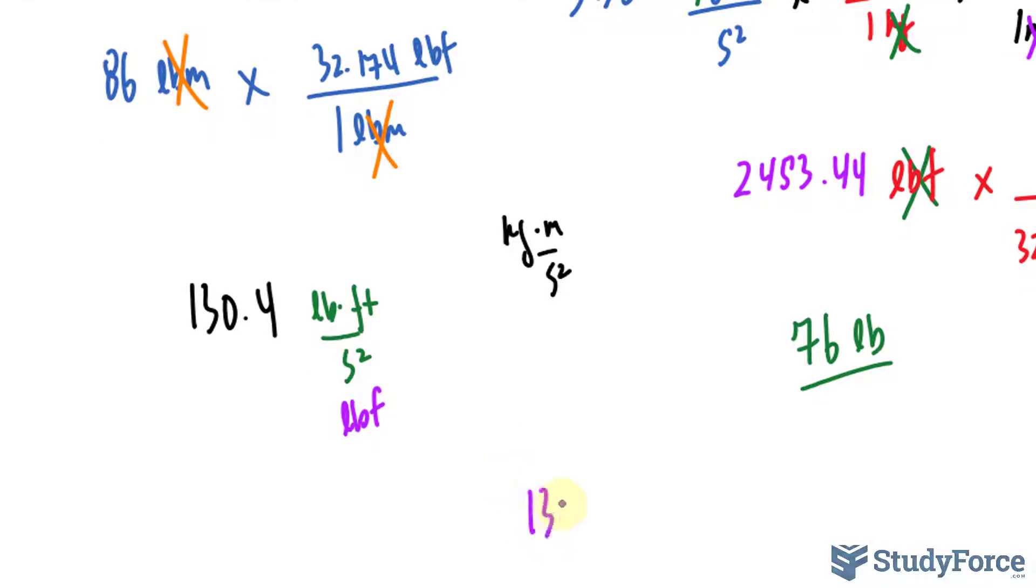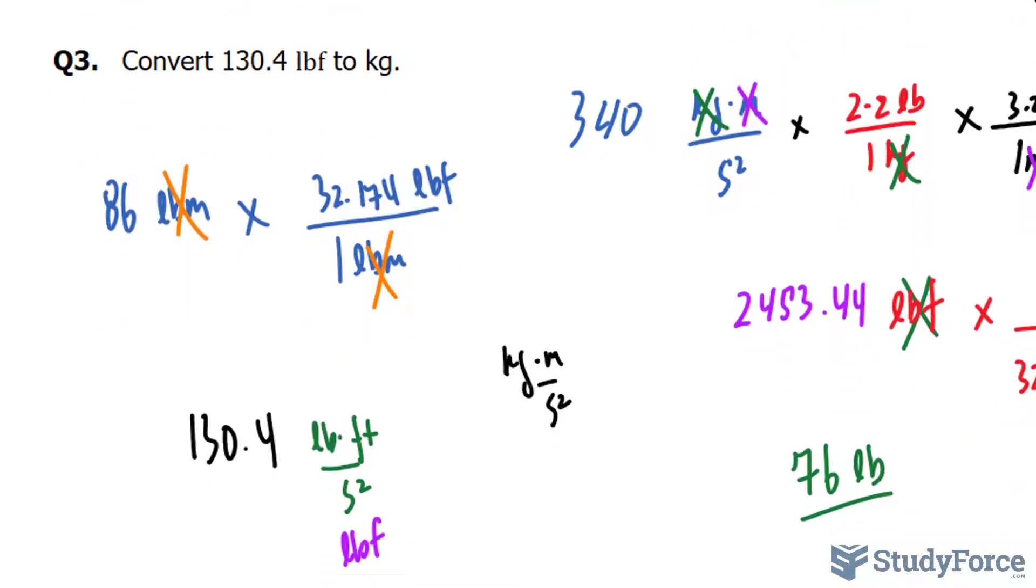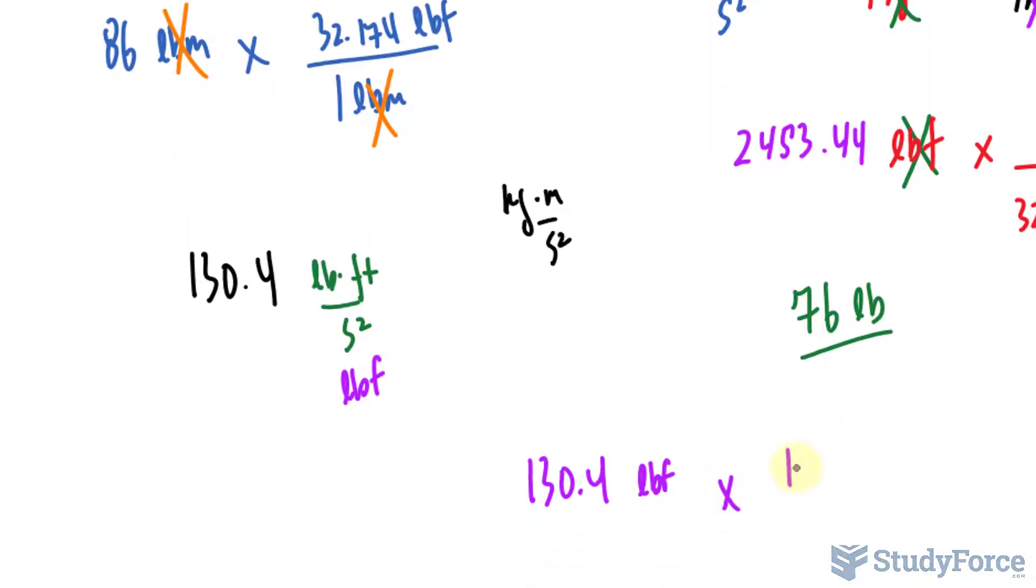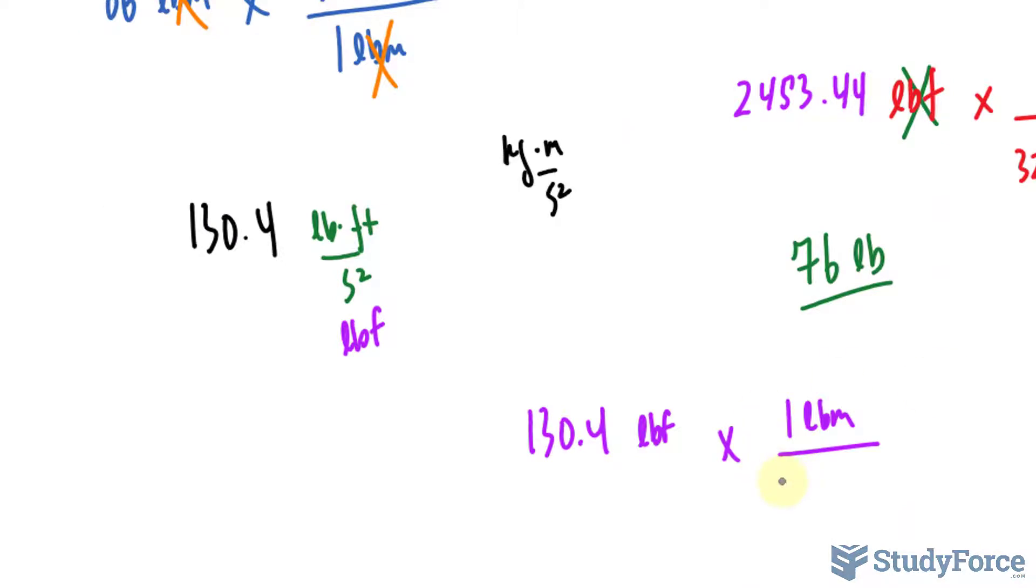Here's what I mean. So I'll take 130.4 lbf and the conversion ratio is 1 lbm is equal to 32.174 lbf. So I will write down 1 lbm at the top. That's what I'm looking for. And what I want to get rid of is that unit. So I'll write down 32.174 lbf at the bottom.